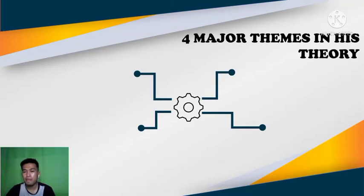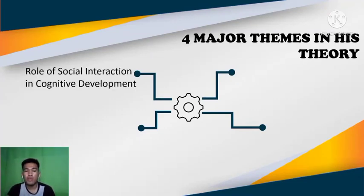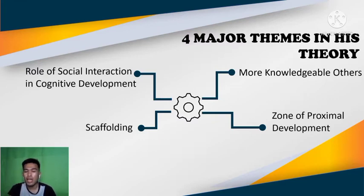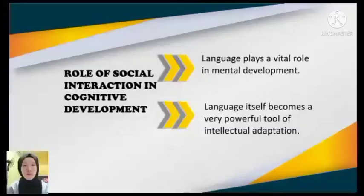There are four major themes in his theory: the role of social interaction in cognitive development, more knowledgeable others, zone of proximal development, and scaffolding. The role of social interaction in cognitive development — language plays a vital role in mental development.